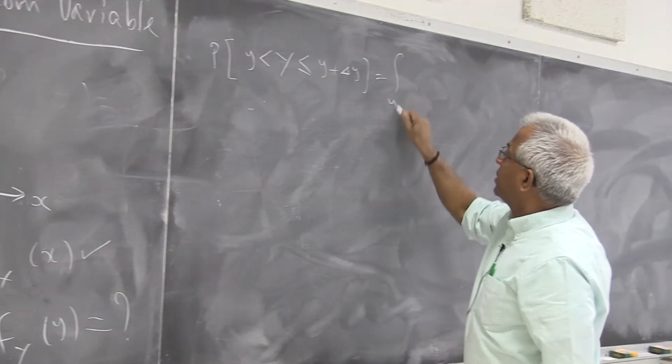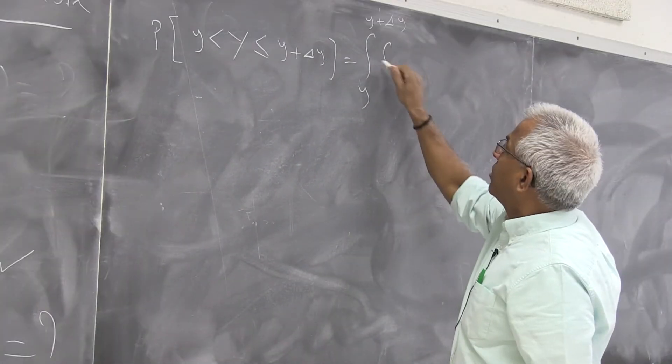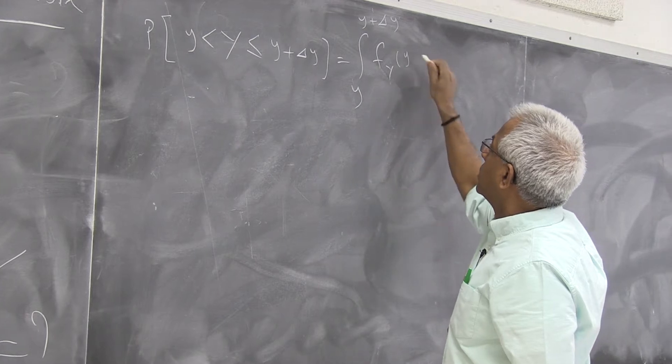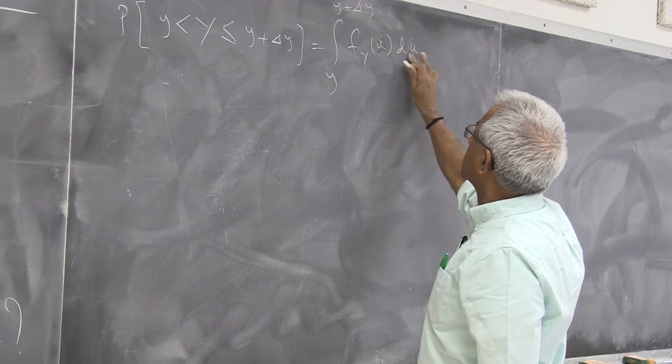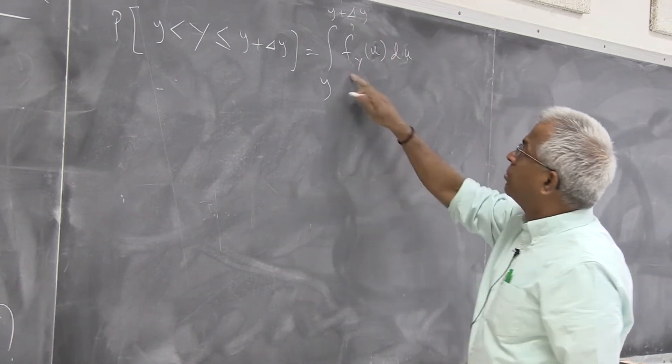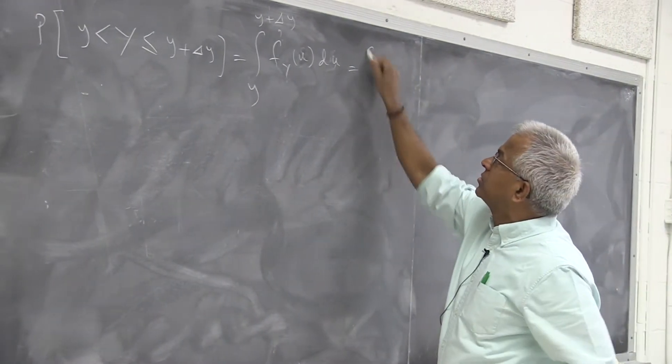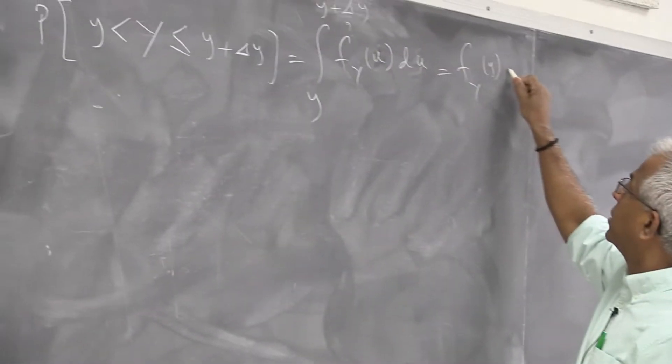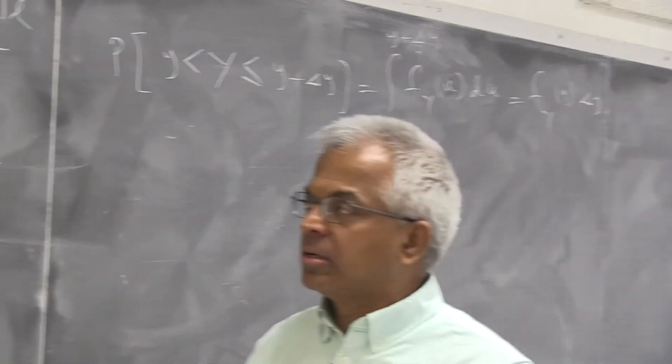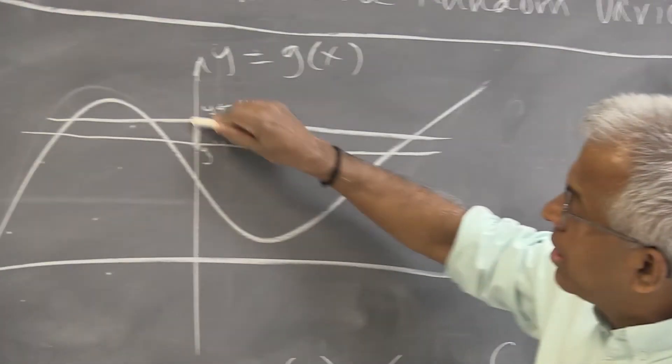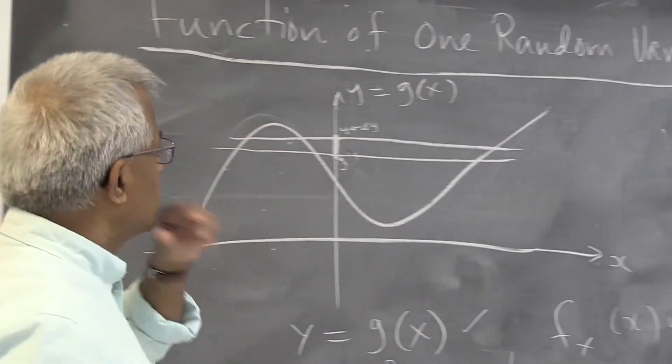As we know, this is the area under the density function of y. Of course, y is unknown. So this is what we are trying to find out. But if delta y is very small, we can approximate this as f_y(y) multiplied by delta y. That's the classic integration. But on the other hand, as y takes the values between y and y plus delta y...